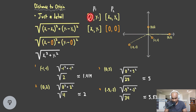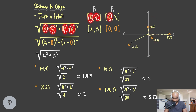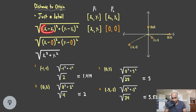So the distance formula uses x1, x2, y1, and y2. You take the difference of the x coordinates, square it — whether positive or negative, squaring makes it positive. Same for the y differential squared. Add those together and take the square root. Since our second point is the origin (0, 0), x2 and y2 are both zero, which simplifies the equation to just x1 squared plus y1 squared under the square root.